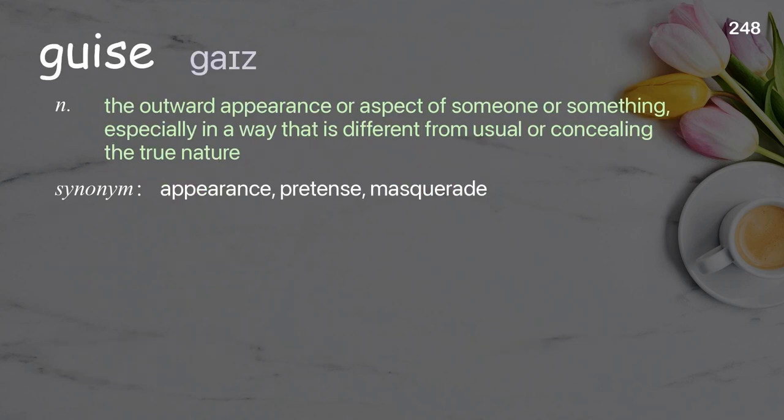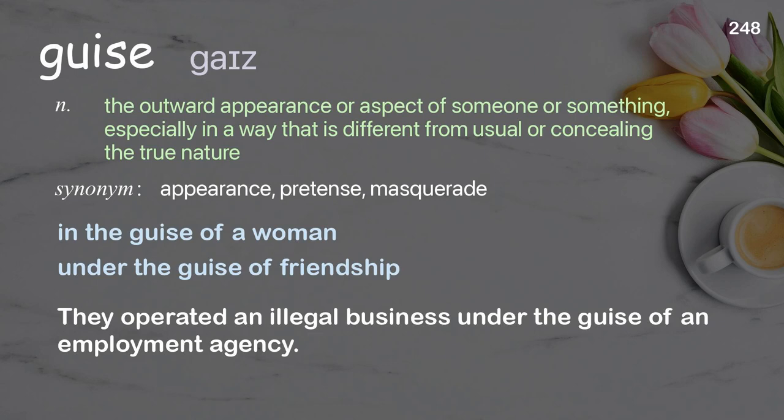Guise. The outward appearance or aspect of someone or something, especially in a way that is different from usual or concealing the true nature. Examples: in the guise of a woman, under the guise of friendship. They operated an illegal business under the guise of an employment agency.